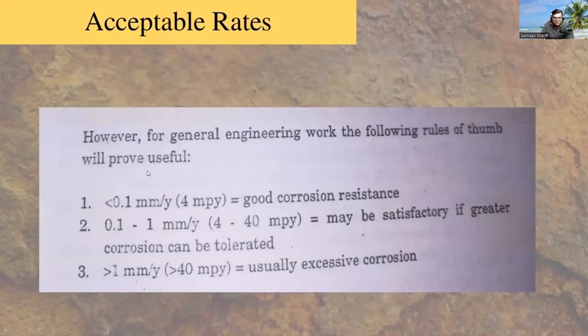This is the engineering standards which follows the thumb rules as follows, where it has three thumb rules. Less than 0.1 millimeter per year is good corrosion resistance. 0.1 to 1 millimeter per year is satisfactory. Greater than 1 millimeter per year is usually excessive corrosion.